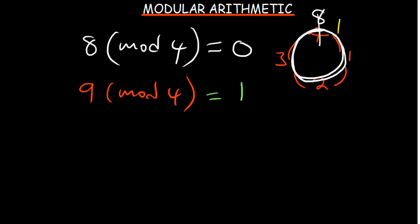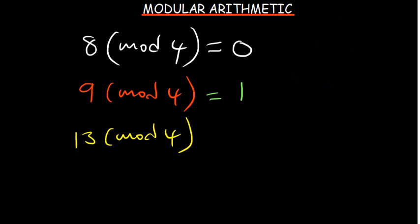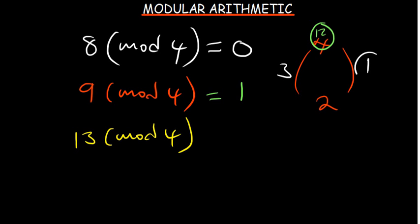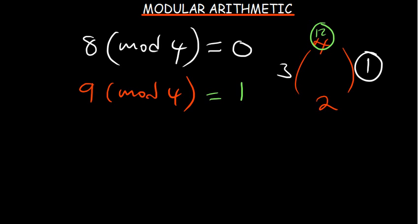What about 13 mod 4? You think of the 4-hour clock ending at 4, with positions 1, 2, and 3. How many times can you divide 4 into 13? It's 3 times, because 4 × 3 = 12. So 12 lands back at the 4 position and you move one more step, giving a remainder of 1. So 13 mod 4 = 1.